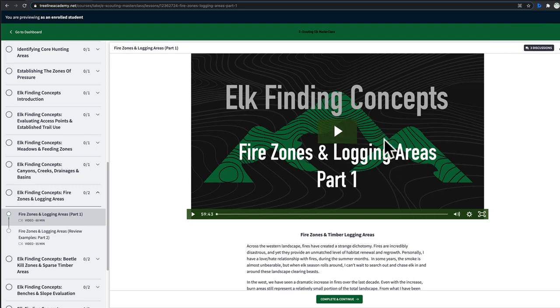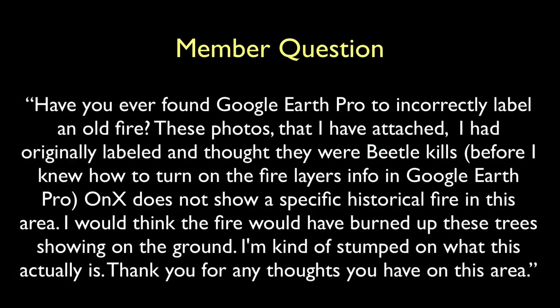Let's review what this question was: 'Have you ever found Google Earth Pro to incorrectly label an old fire? These photos that I've attached I had originally labeled as beetle kills before I knew how to turn on the fire layers in Google Earth Pro. OnX does not show a specific historical fire in this area. I would think that the fire would have burned up these trees showing up on the ground. I'm kind of stumped on what this actually is.'